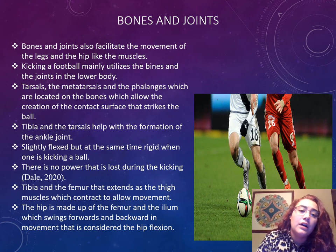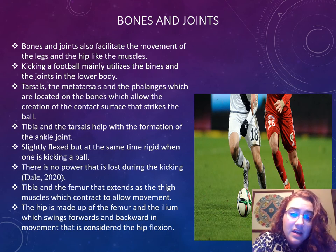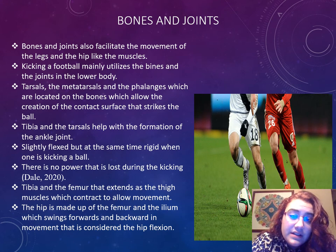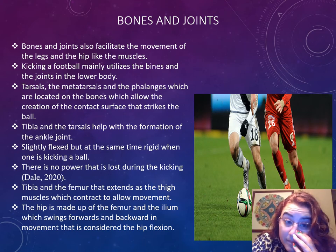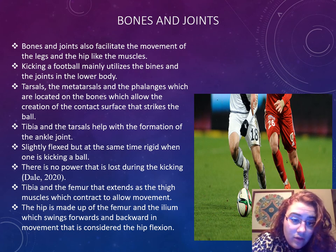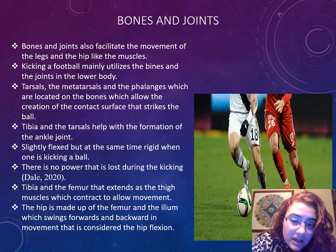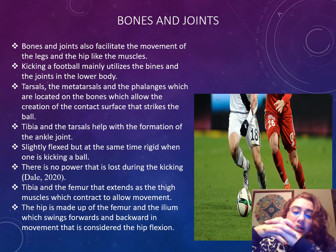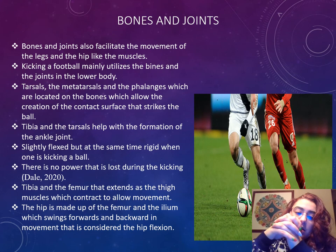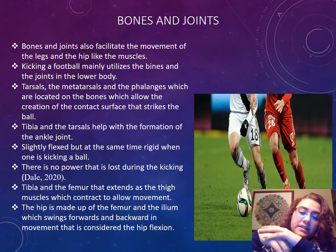For bones and joints — bones and joints also facilitate the movement of the legs and the hip, like the muscles. Kicking a soccer ball utilizes the bones and joints in the lower body. Tarsals, metatarsals, and the phalanges are all located on the bones, which allow the creation of the contact surface that strikes the ball. The tibia and tarsals help with the formation of the ankle joint — it's slightly flexed and at the same time rigid when one is kicking a ball, so no power is lost during the kicking phase. Tibia and the femur extend as the thigh muscles contract to allow movement. The hip is made up of the femur and the ilium, which swings forwards and backwards during what is considered hip flexion.